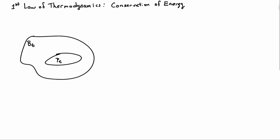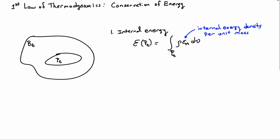We'll start the construction of this law by looking at a deformed body Bt at some moment in time T, and we'll look at a part of that body, Pt. There are two ways of storing energy in Pt. One is by internal energy. The total internal energy is equal to the integral of the internal energy density per unit mass, epsilon_m, multiplied by the density rho, giving internal energy per unit volume, integrated over the volume.